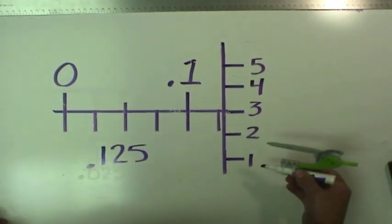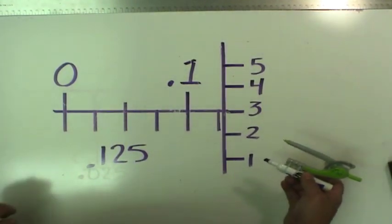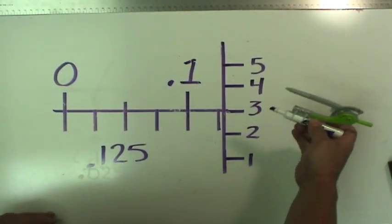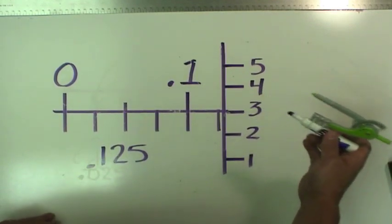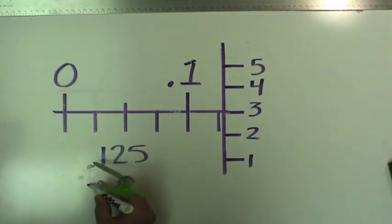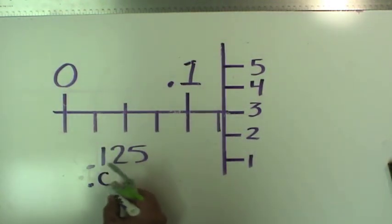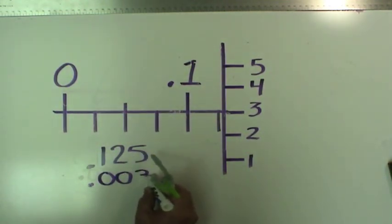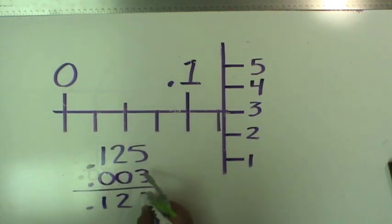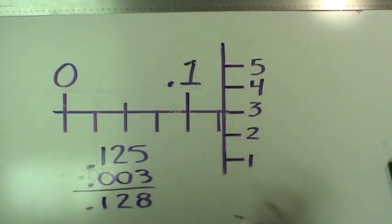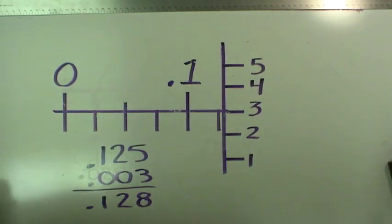And we need to know what to add to that 0.125, and we'll read from this scale, and we'll see that we're going to add three thousandths. This is 0.003. So we'll add that to our 0.125, and we'll get 0.128. So that's the reading on this scale, 0.128.